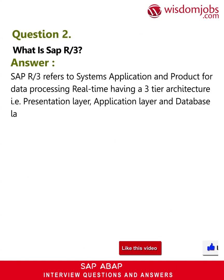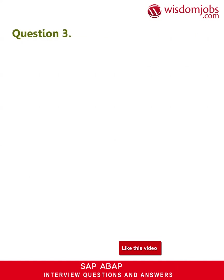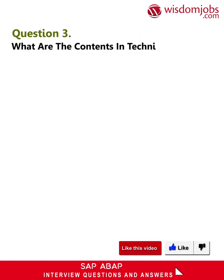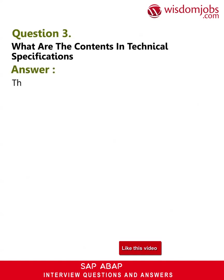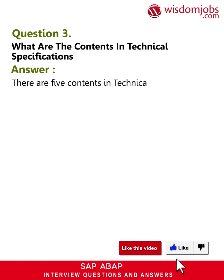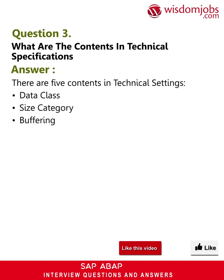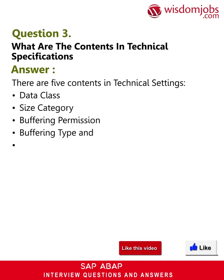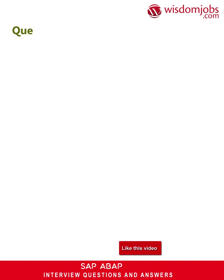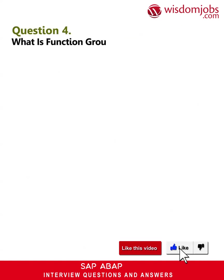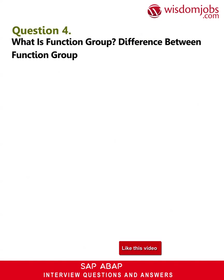Question 3: What are the contents in technical specifications? Answer: There are five contents in technical settings: data class, size category, buffering permission, buffering type, and logging.